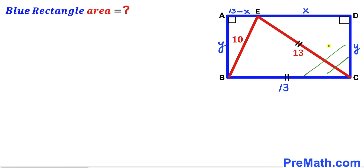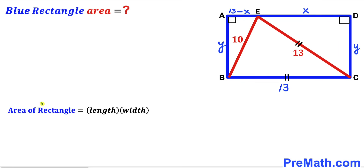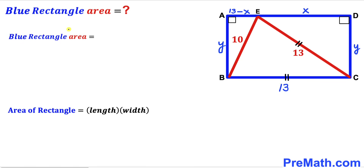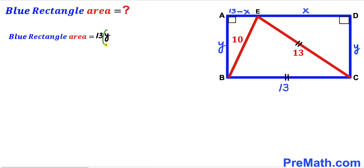Since we are interested in calculating the area of this blue rectangle ABCD, let's recall the area of rectangle formula: area is always equal to length times width. In our case the length of this rectangle is 13 whereas the width is Y, so therefore this blue rectangle ABCD area has got to be 13 times Y. Now our task is to find the value of Y in order to calculate the area.